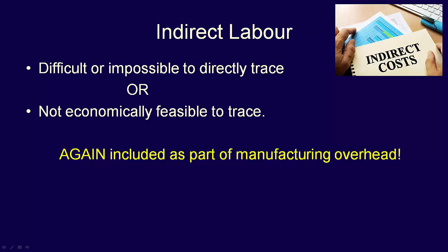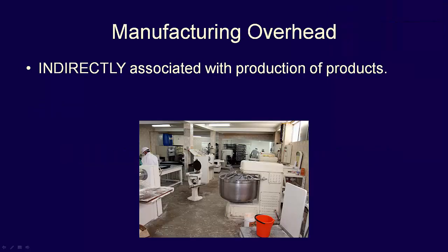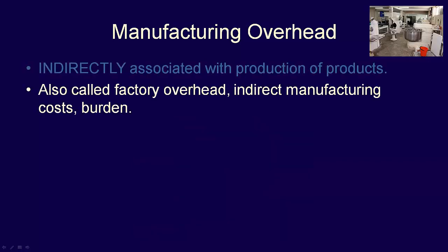So what is manufacturing overhead? Manufacturing overhead are those costs which are indirectly associated with the manufacturing of the finished product. Manufacturing overhead is also called factory overhead, indirect manufacturing costs, and burden.